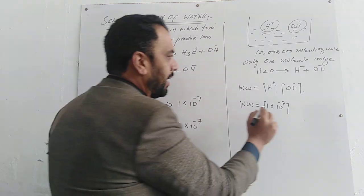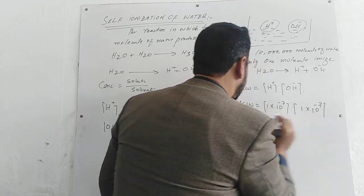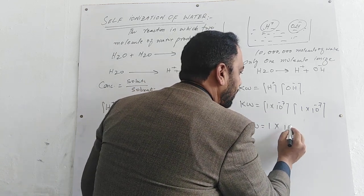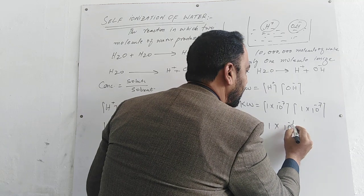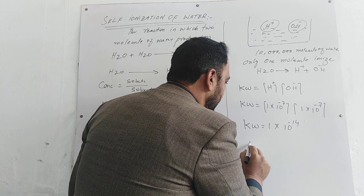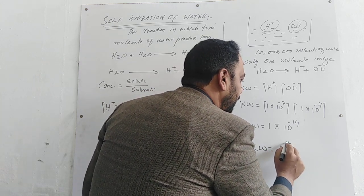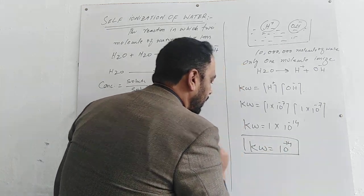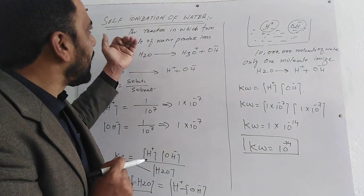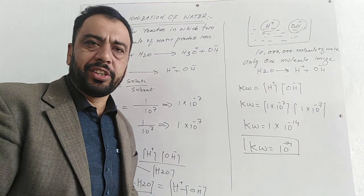KW is equal to H ion concentration — 1 multiplied by 10 power minus 7 — aur OH ion concentration — 1 multiplied by 10 power minus 7. Toh KW hamare saath barabar hai 1 multiplied by 10 power minus 14. Ya KW is equal to 10 power minus 14. This is the KW water constant key value. This is the derivation for self-ionization of water, also called auto-ionization of water.